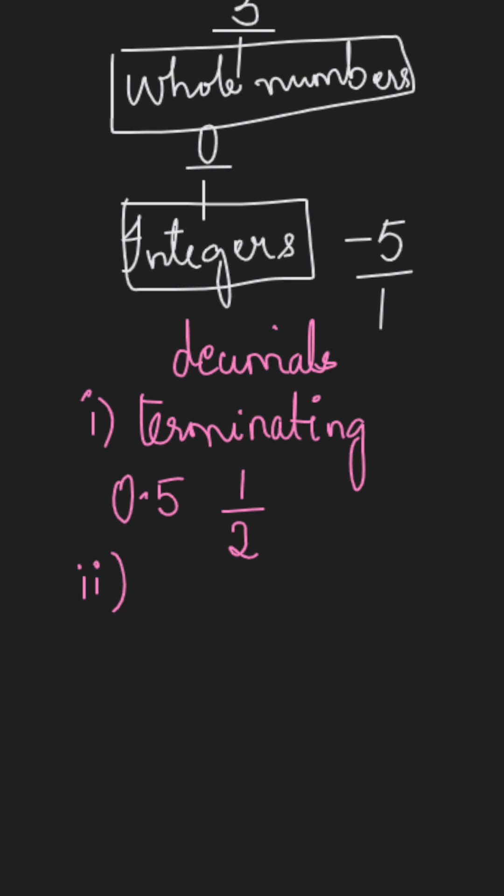The second type of decimals are repeating decimals. Repeating decimals are the decimals which never end. For example, if I take 0.3 bar or 0.333 and it goes on forever.